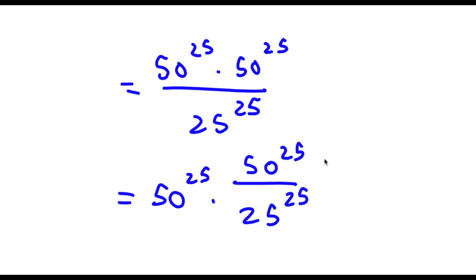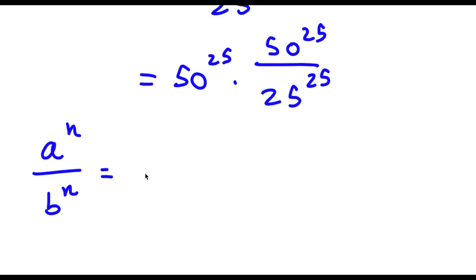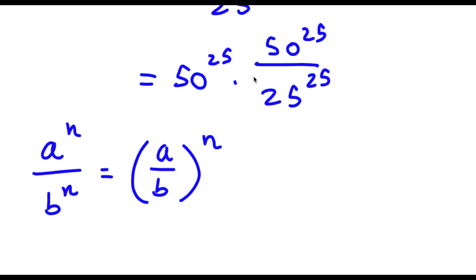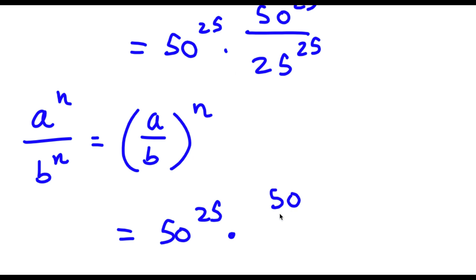Now if I have something in the form a to the power of n over b to the power of n, this is simply equal to (a over b) to the power of n — essentially factoring out the exponent. So I have 50 to the power of 25 over 25 to the power of 25, which I can rewrite as 50 to the power of 25 times (50 over 25) to the power of 25.